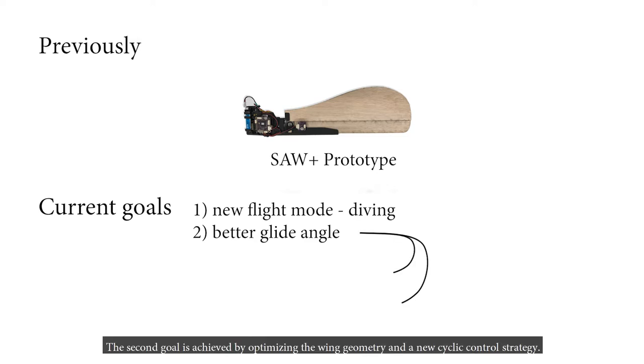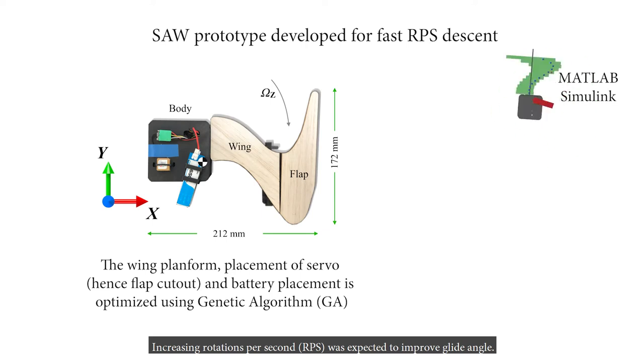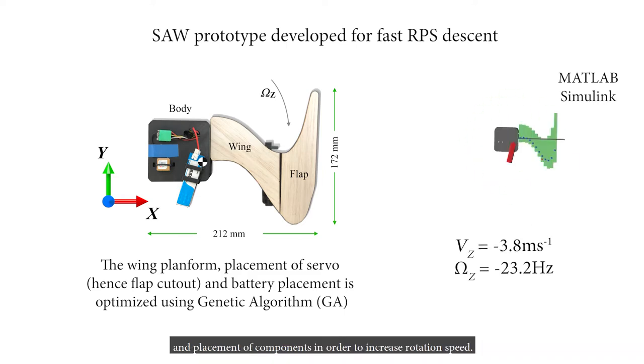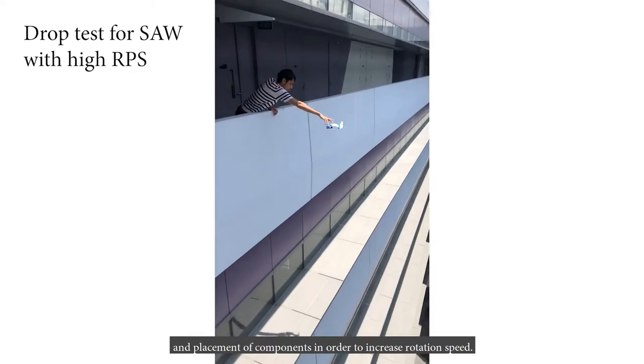The second goal is achieved by optimizing the wing geometry and a new cyclic control strategy. Increasing rotations per second was expected to improve the glide angle. We used blade element theory and genetic algorithm to come up with the wing planform and placement of components in order to increase rotation speed.